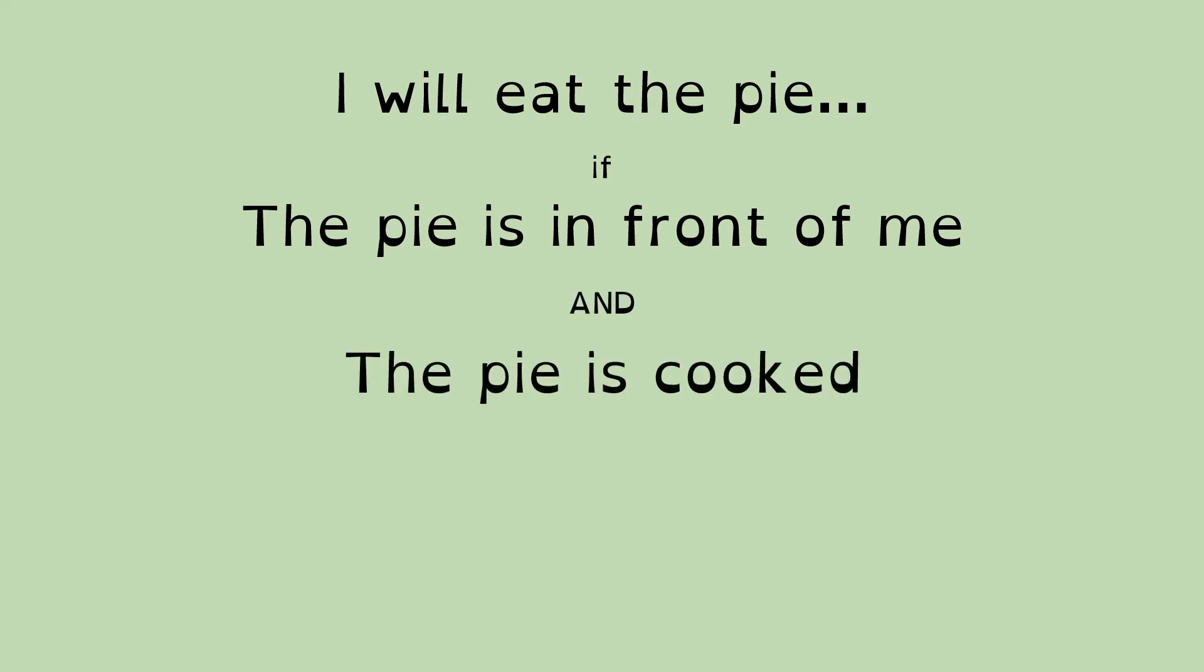Here's another example. I will eat the pie if the pie is in front of me AND the pie is cooked. So I'm not going to eat it if it's not cooked. And here's our second operator, it's the AND operator. This is being used on these statements to produce an outcome.